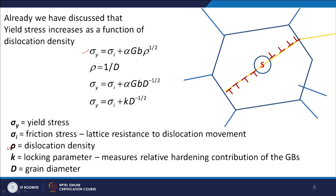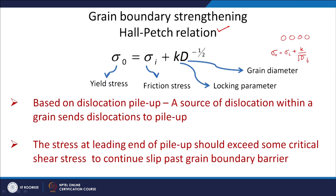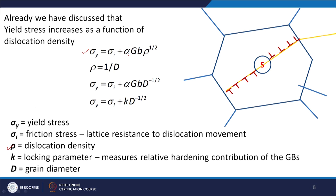So sigma-y is the yield stress, sigma-i is the friction stress or lattice resistance to dislocation movement, rho is dislocation density, k is the locking parameter measuring the relative hardening contribution of the grain boundaries, and d is the grain diameter. The strength of the material depends on grain size, and the strengthening comes because grain boundaries act as barriers to dislocation movement.